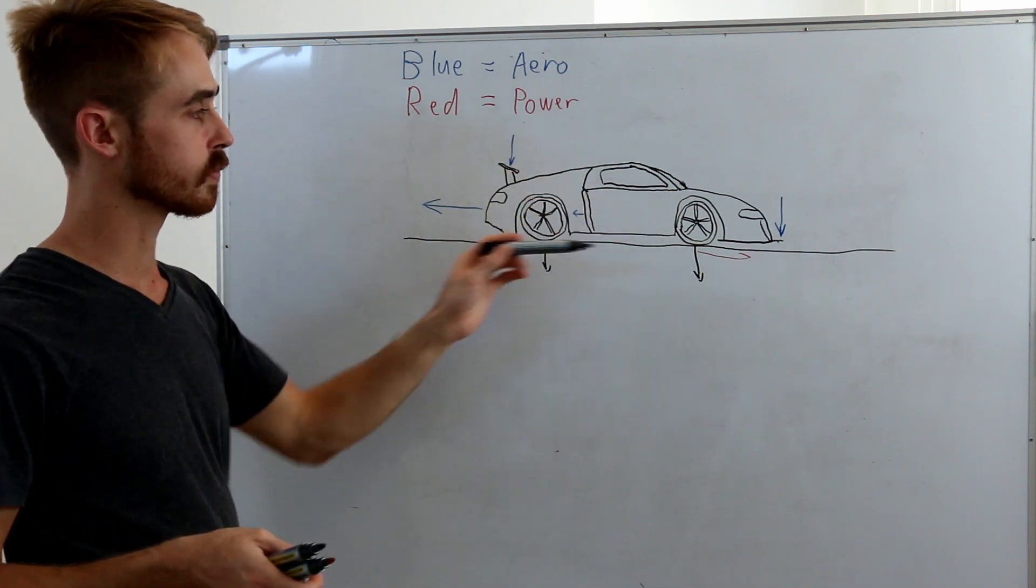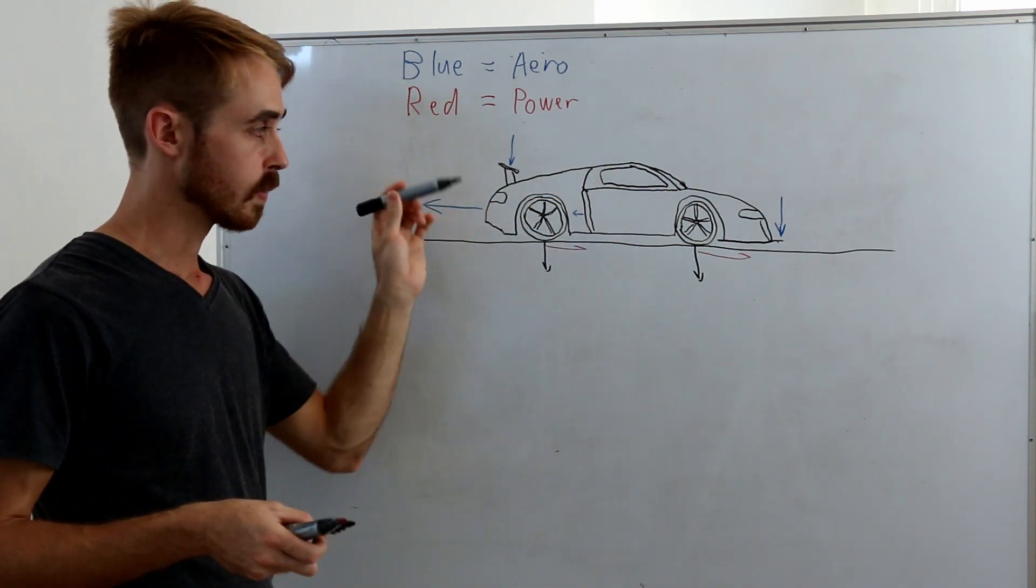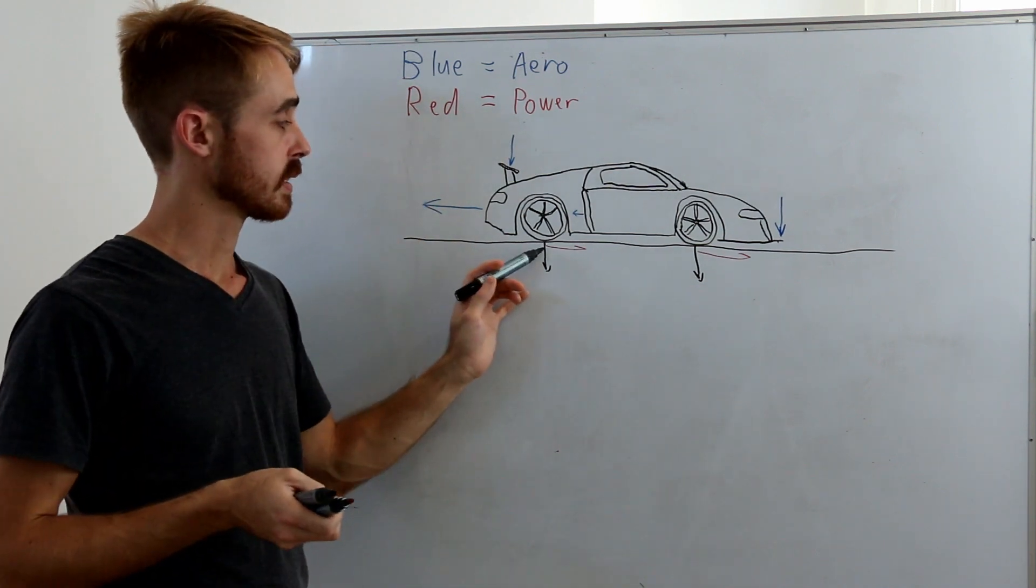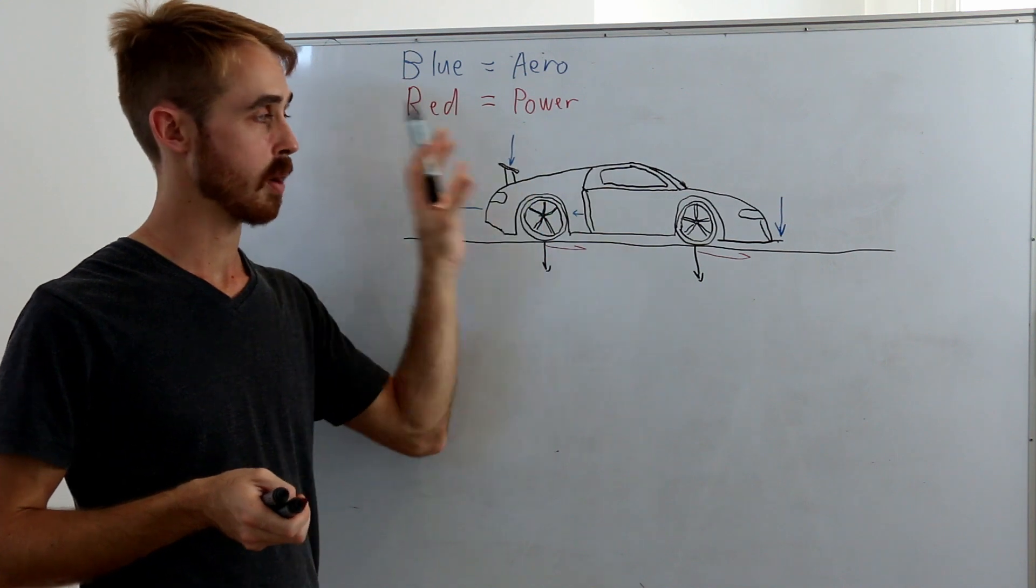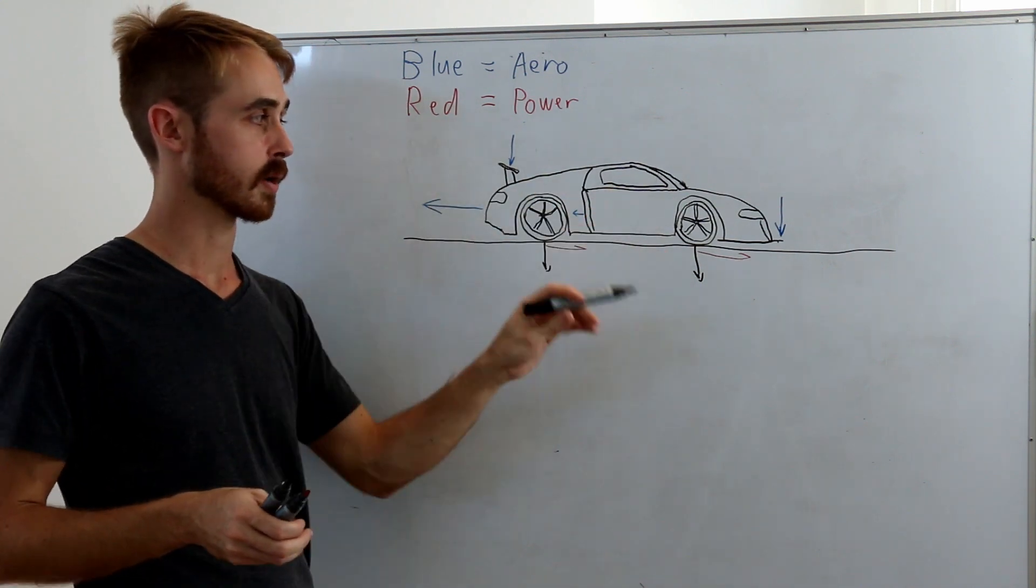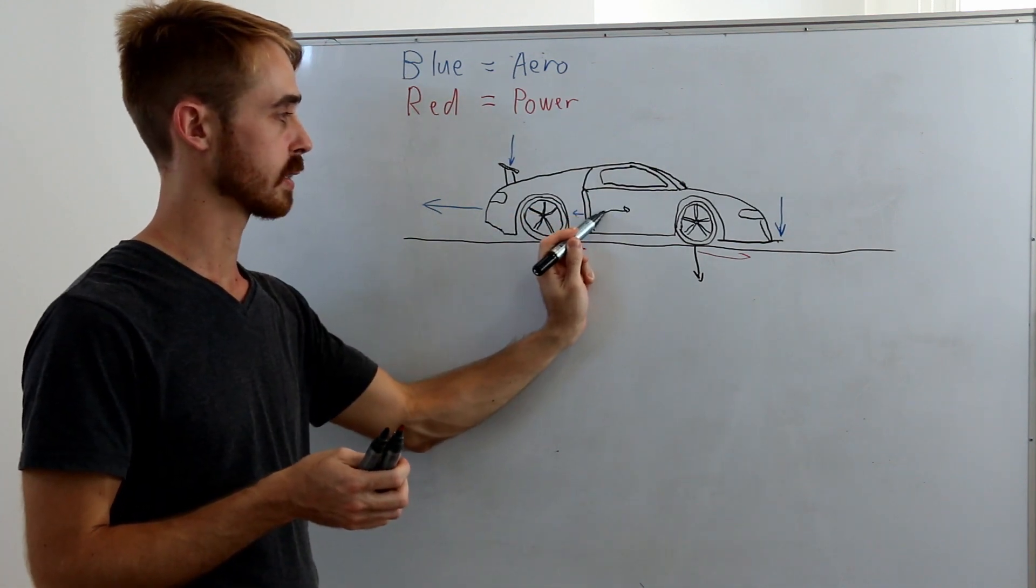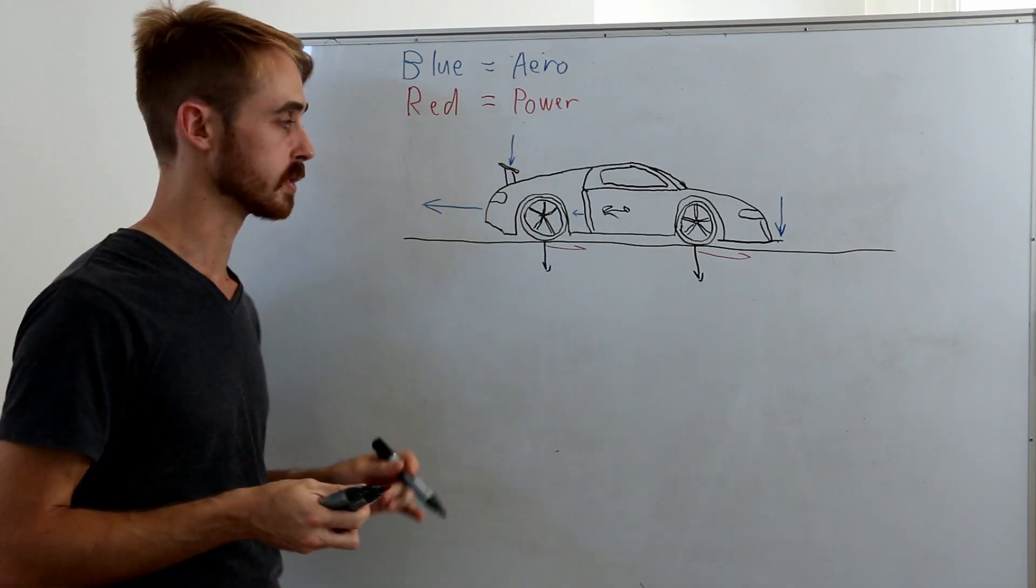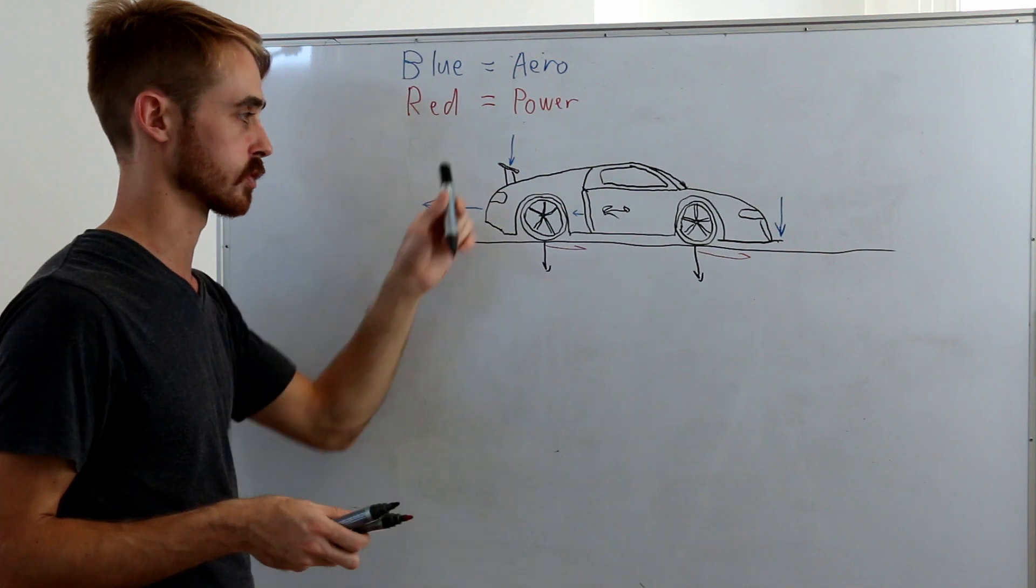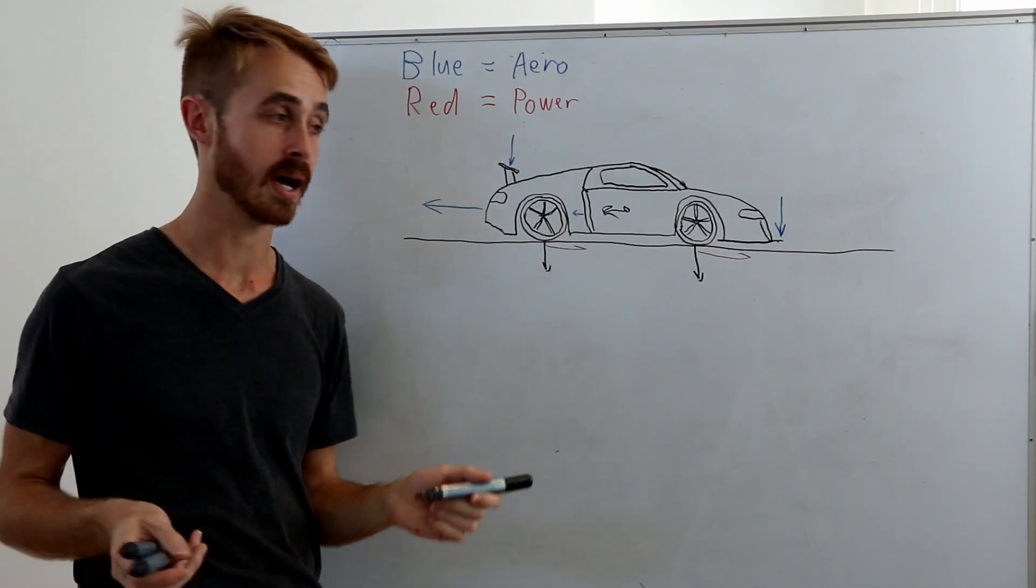To start with, if we imagine the forces on the car, we have a few different things occurring during an acceleration run. When we're at standstill and launching, initially all we have is our acceleration provided by the power from the engine, so our forward force along the tires, the weight of the car going down, and the mass of the car pulling us back. Then as speeds get higher, our aerodynamic forces start kicking in—downforce coming in as well as drag from various parts of the car.